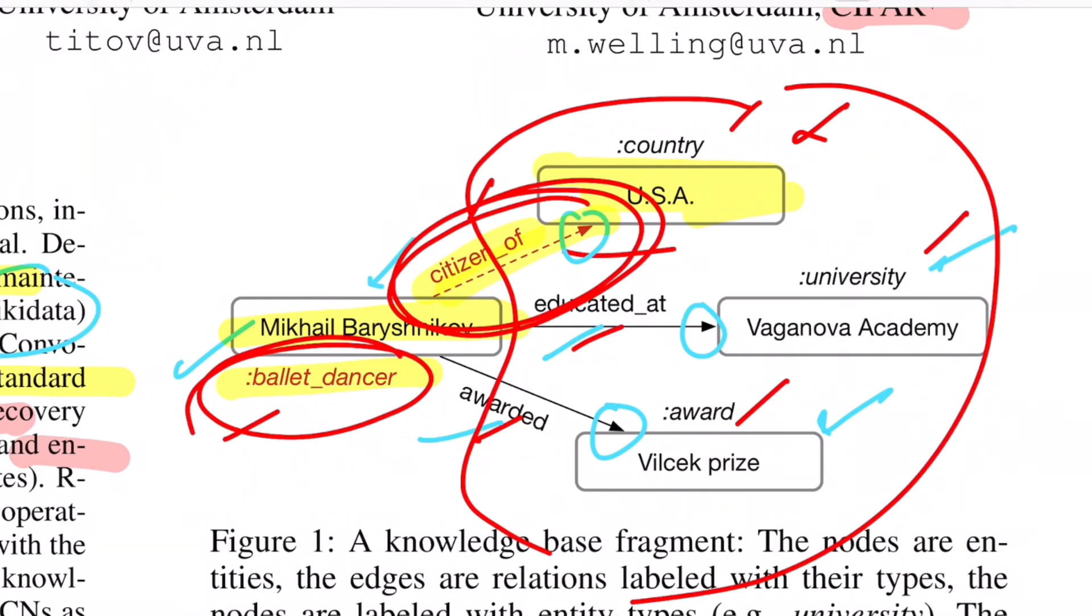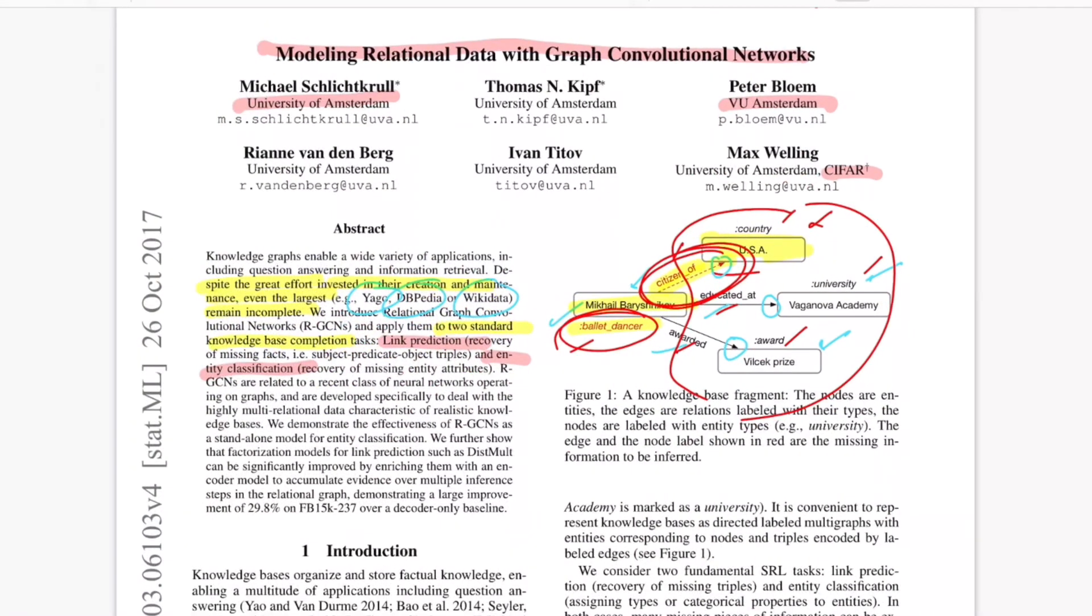So clearly the previous approaches such as GCN and GraphSage don't really scale to such graphs. So for that purpose only, this paper introduces a concept of relation into the graph convolution networks. So let's see through the equation.